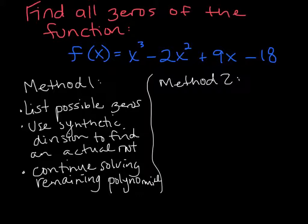Method one would be to list all the possible zeros using the factors of 18 divided by the factors of 1, then use synthetic division, use some trial and error to find one actual root, and then continue to solve either by factoring or the quadratic formula to find the rest of the zeros.